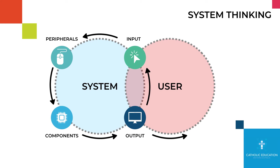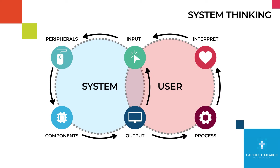For example, when we think about our systems, we have inputs and we have outputs. The user will input through some sort of action, generally through some sort of hardware peripheral like a keyboard or a mouse. The components within that system will then build up and interpret that data and then output from that system. The user then will process what they see, interpret it, and react in a certain way.